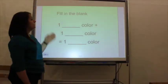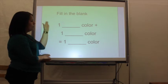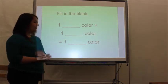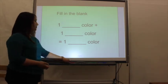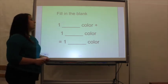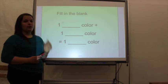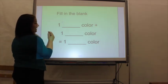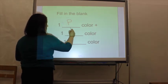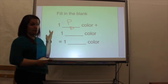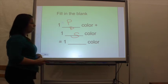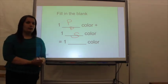On the last slide of the lesson, the students are asked to fill in the blank. The word problem is: one blank color plus one blank color equals one blank color. This should have been reinforced throughout the entire lesson. Since they're in first grade, they would just write P for primary or S for secondary. The answer is: one primary color plus one primary color equals one secondary color.